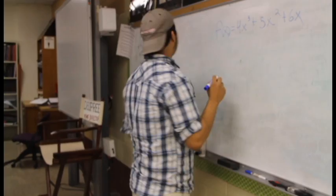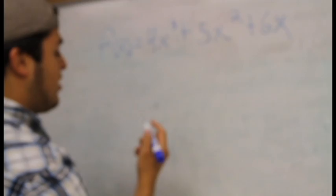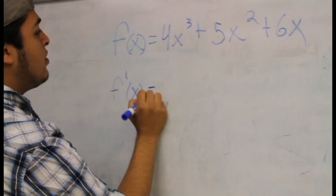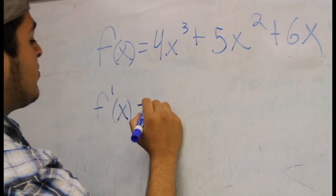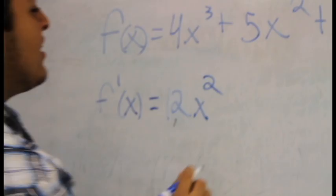Alright guys, today we're going to be going over a derivative problem. The problem is f(x) = 4x³ + 5x² + 6x. The first thing we're going to do is write f prime of x, which would be the derivative. So you go from 4x cubed — on derivatives you take the exponent minus 1 and multiply the original exponent by the coefficient. So that's going to be 12x squared.